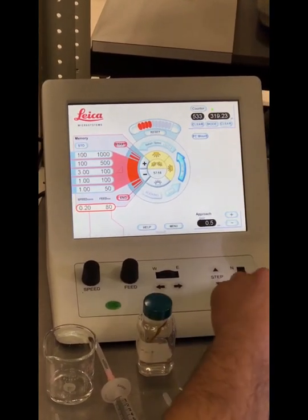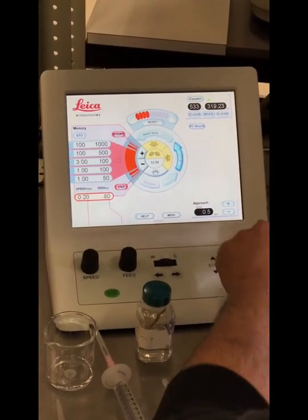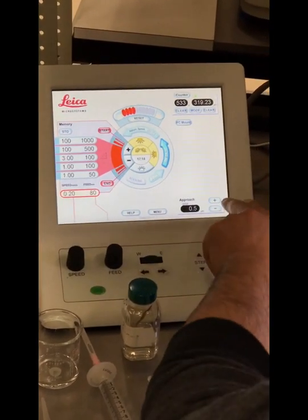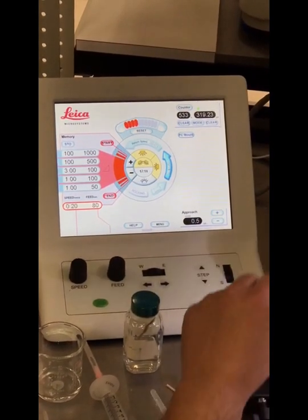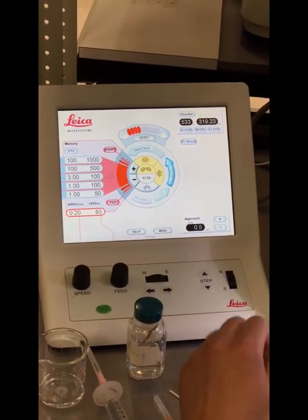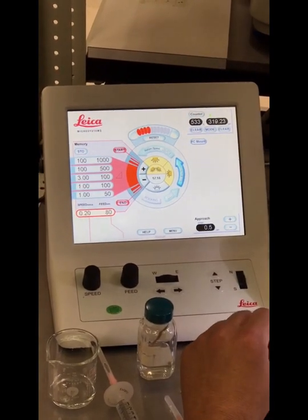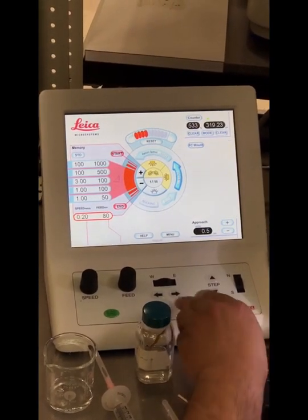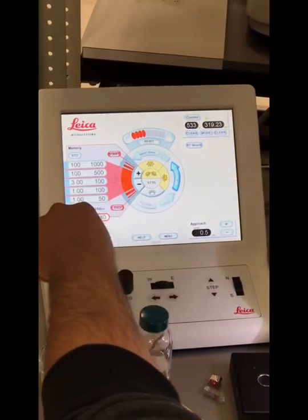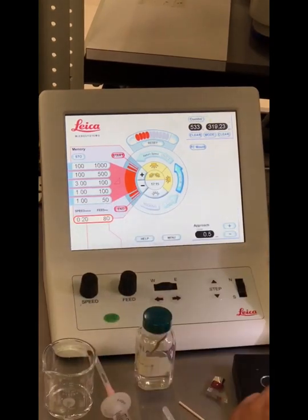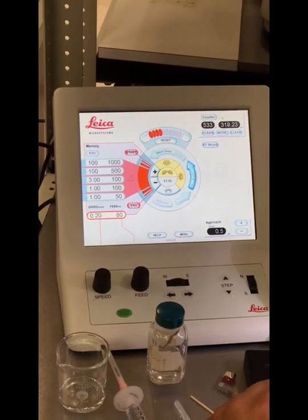North and south step size setting is right here. This is the coarse movement, and this is the step setting. This is the approach. Your east and west fine movement settings are here. The east and west step and continuous movements are here. The feed setting is here, as well as the cutting speed setting, and the start and stop for the motorized cutting.